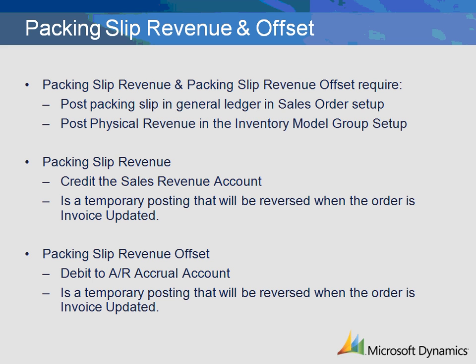In conjunction with pack slip and pack slip offset transactions, there are packing slip revenue and packing slip revenue offset transactions. In addition to the above prerequisite settings, you must also have the system set to post physical revenue in the inventory model group setup. The packing slip revenue and packing slip revenue offset accounts will create a temporary posting in the ledger for the estimated revenue value of the sale. A credit transaction will be created for the packing slip revenue transaction with the offset debit transaction against the packing slip revenue offset transaction. A typical setup will be to credit a sales accrual account and debit an accounts receivable accrual account. These transactions are created at the time of pack slip update in Microsoft Dynamics AX.